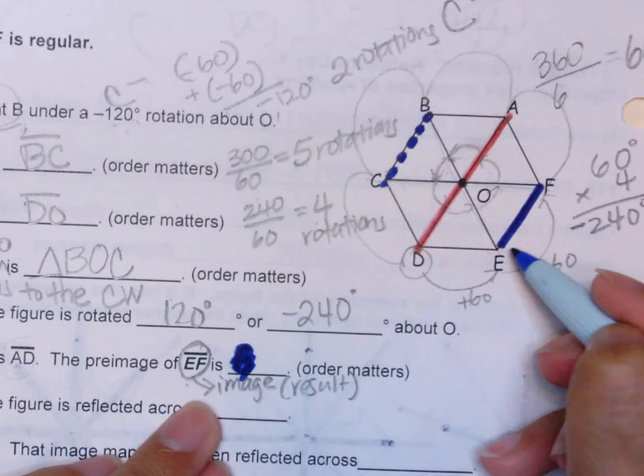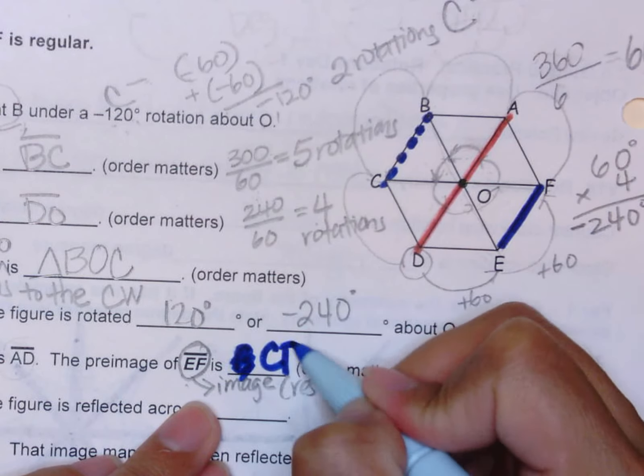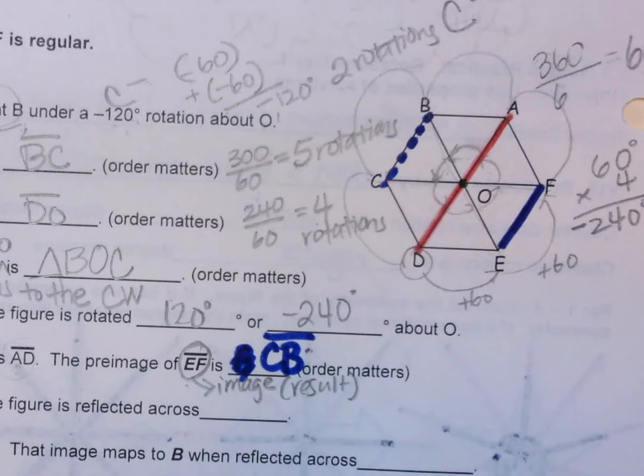BC is your pre-image. In this case, we have to follow the order, making sure that we have the right order. So E matches with C, and then F matches with B. So that would be your answer.